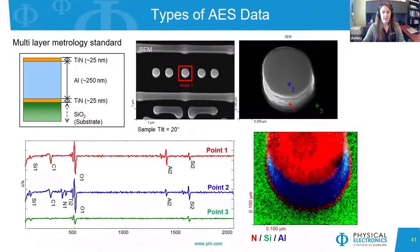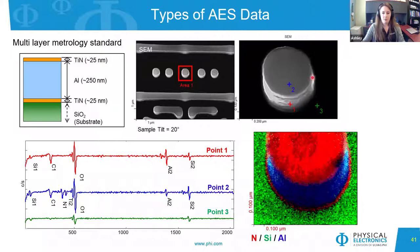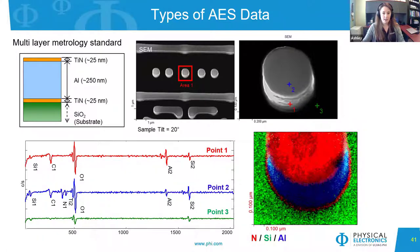Here's a brief example of AES data acquired on a multilayer metrology standard. A typical workflow consists of acquiring SEM images first. From the SEM image, we can assign points to different features of interest within the image, then take Auger spectra from these points to get qualitative and quantitative elemental analysis. Furthermore, we can create an elemental image based on the elements present in the survey spectrum to get two-dimensional elemental distribution.